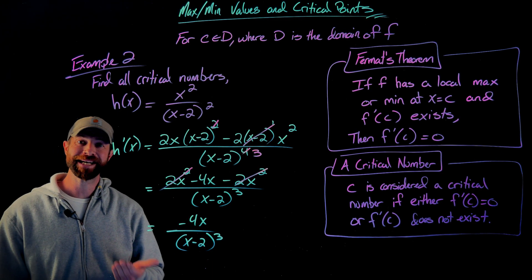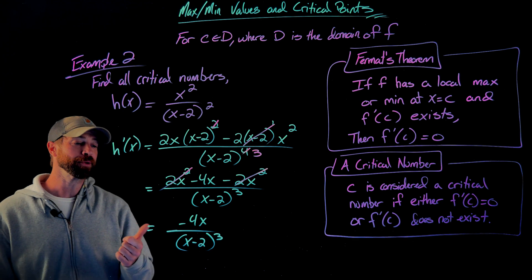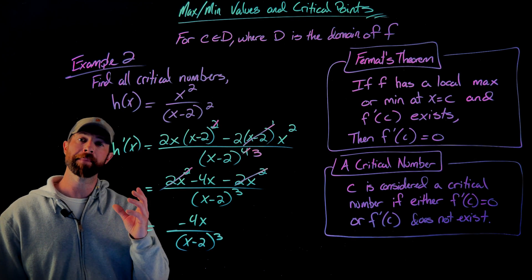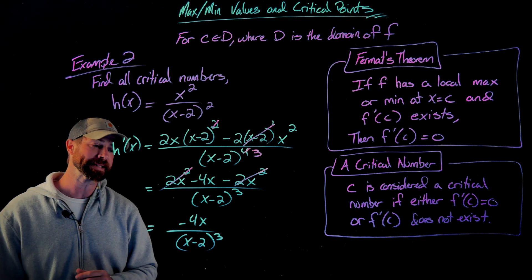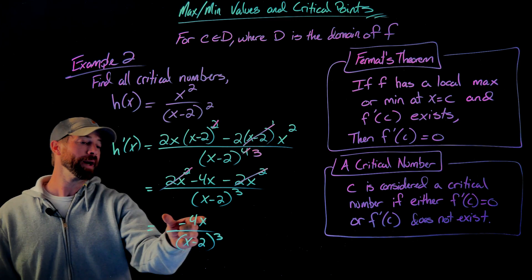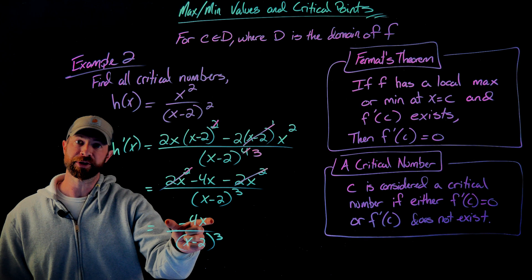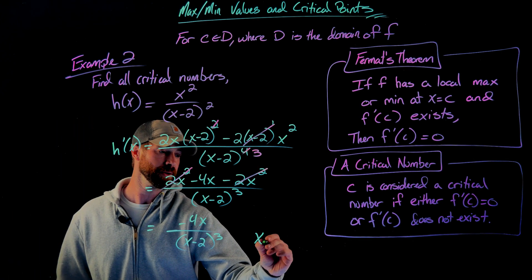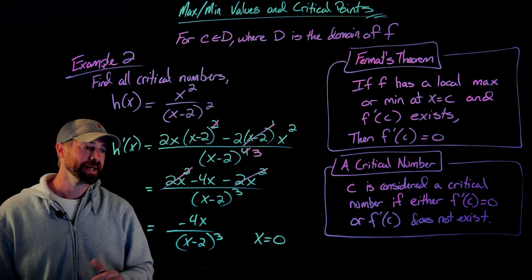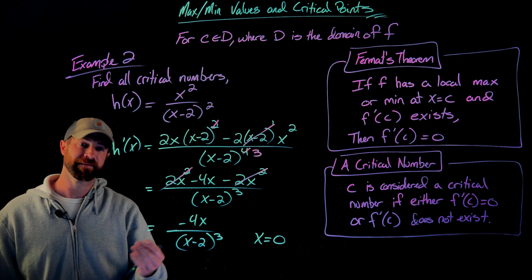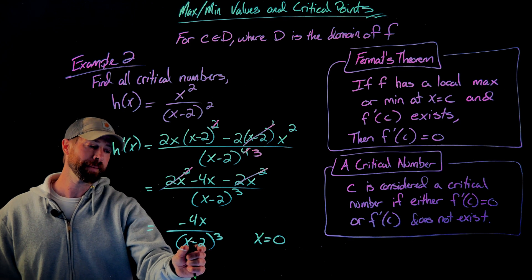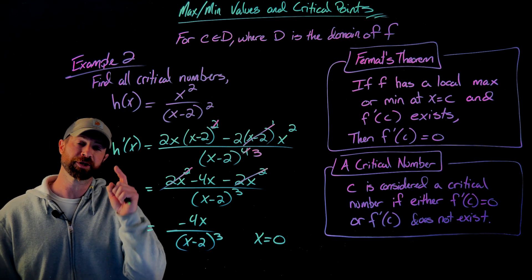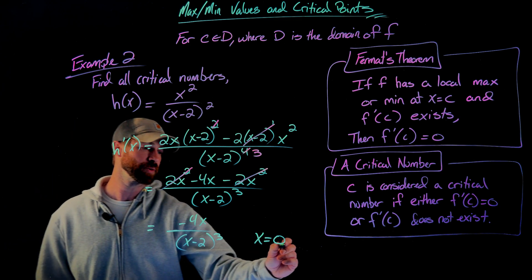All right, and now to identify the critical numbers, I'm looking for what makes this derivative function equal to zero, or what makes it undefined, or what makes it not exist. Those two questions are what x value makes the numerator zero that will make the derivative zero. In this case, it's pretty straightforward. It's just x equals zero. And then for values for which this derivative doesn't exist, well, that's when the denominator would be equal to zero. So in this case, two would be a critical number because the derivative does not exist at x equals two.